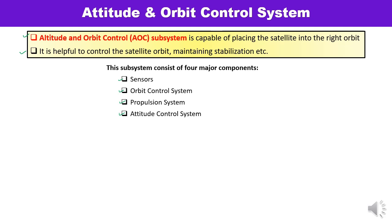There could be certain changes because of the pressure due to solar radiations, or because of the magnetic field of the Earth. Because these forces may impact the satellite, you need to understand how any variation can be corrected.